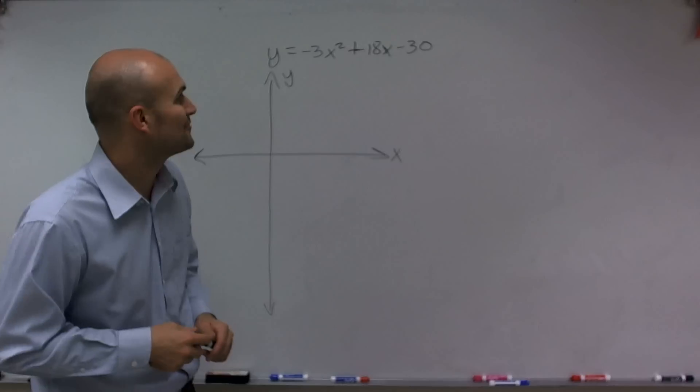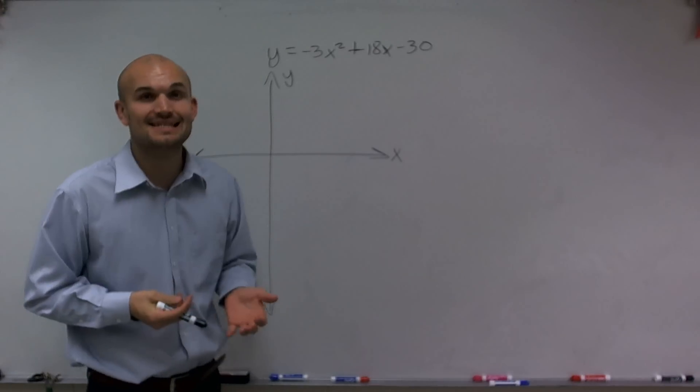Welcome. What I want to do is show you the graph of y equals negative 3x squared plus 18x minus 30.